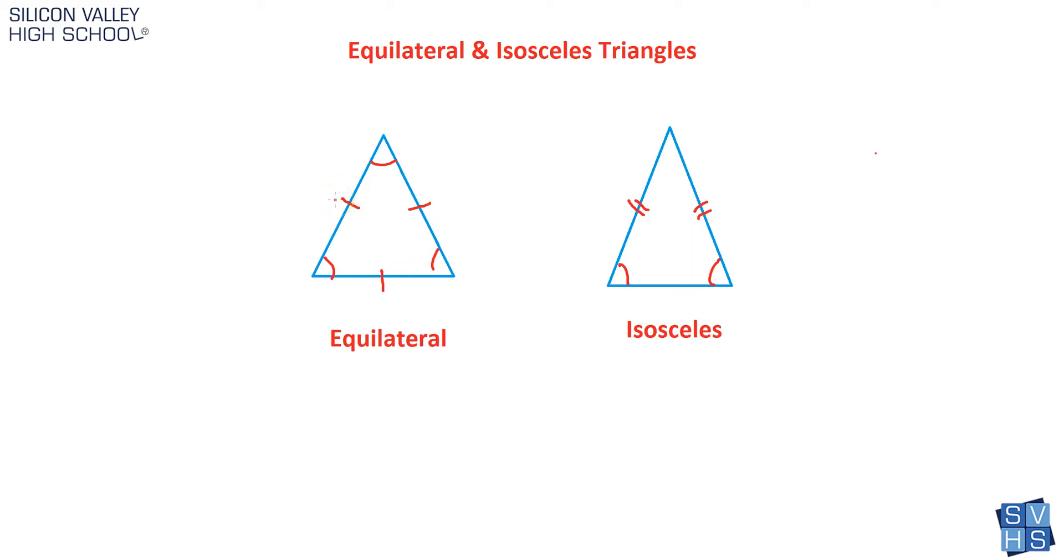They will either give you side lengths, like I just said, five, five, and five, and you'll know it's equilateral, or they can just designate them by these little tick marks. So you'll have this little single tick mark matching this single tick mark. If these match, that means the sides are congruent.